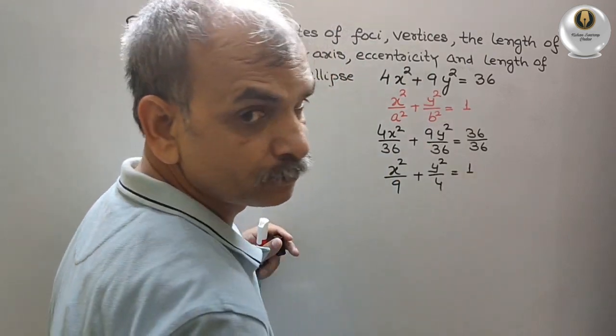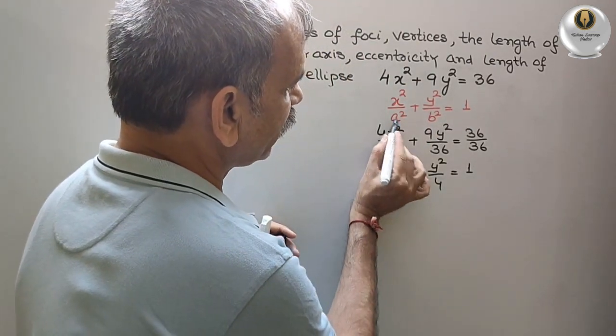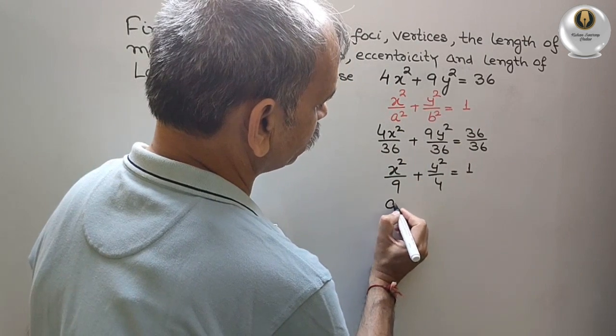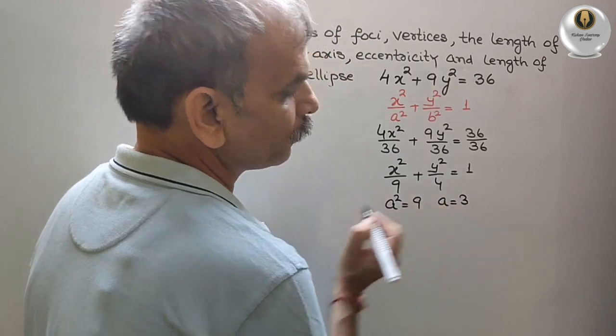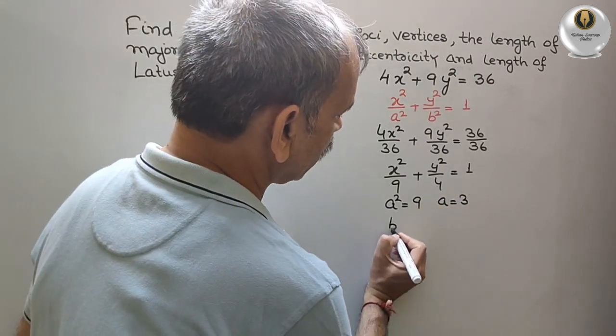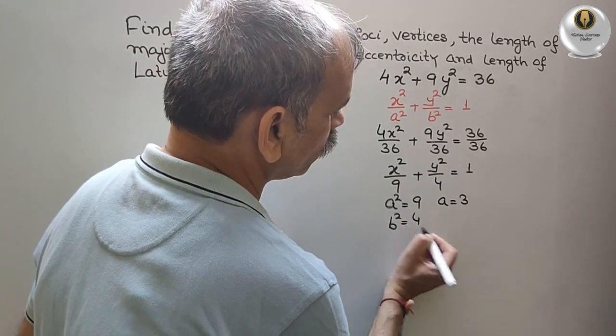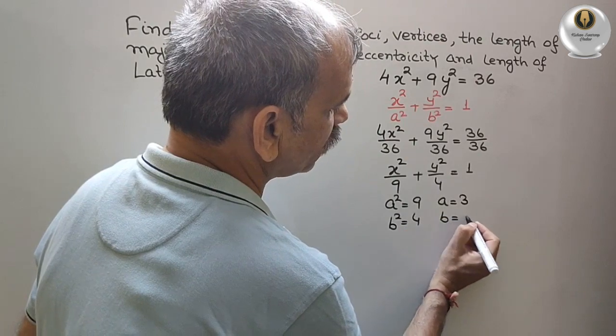Now compare it. If you compare it, a² is 9. Therefore, a is equal to 3. b² is 4. Therefore, b is 2.